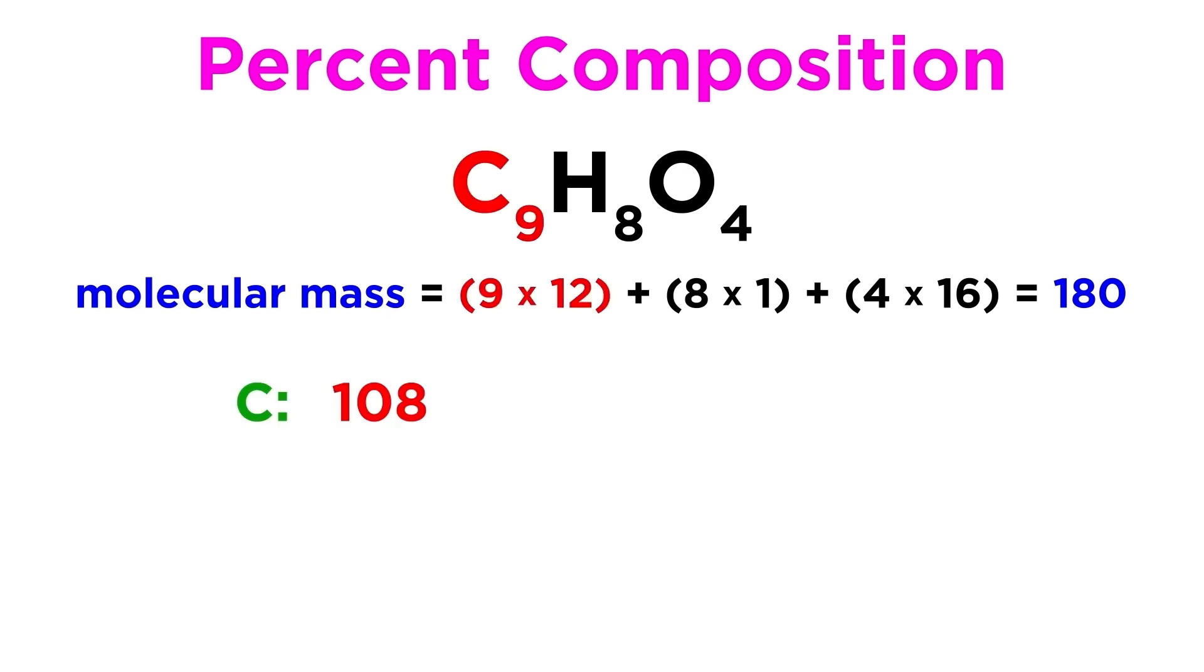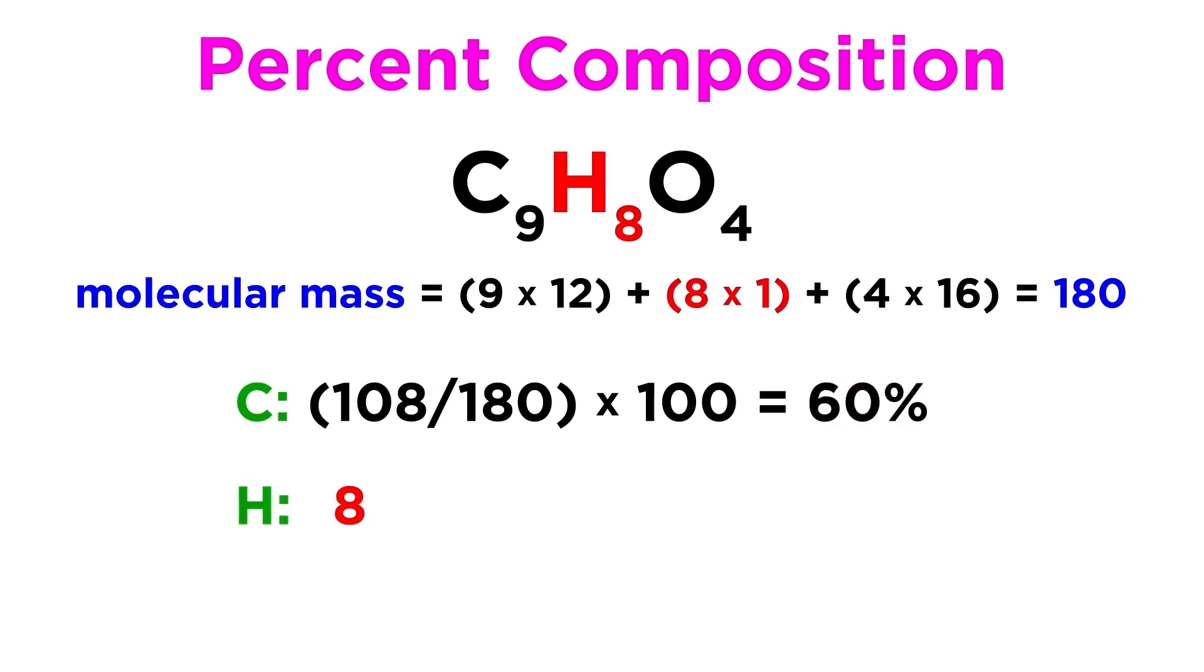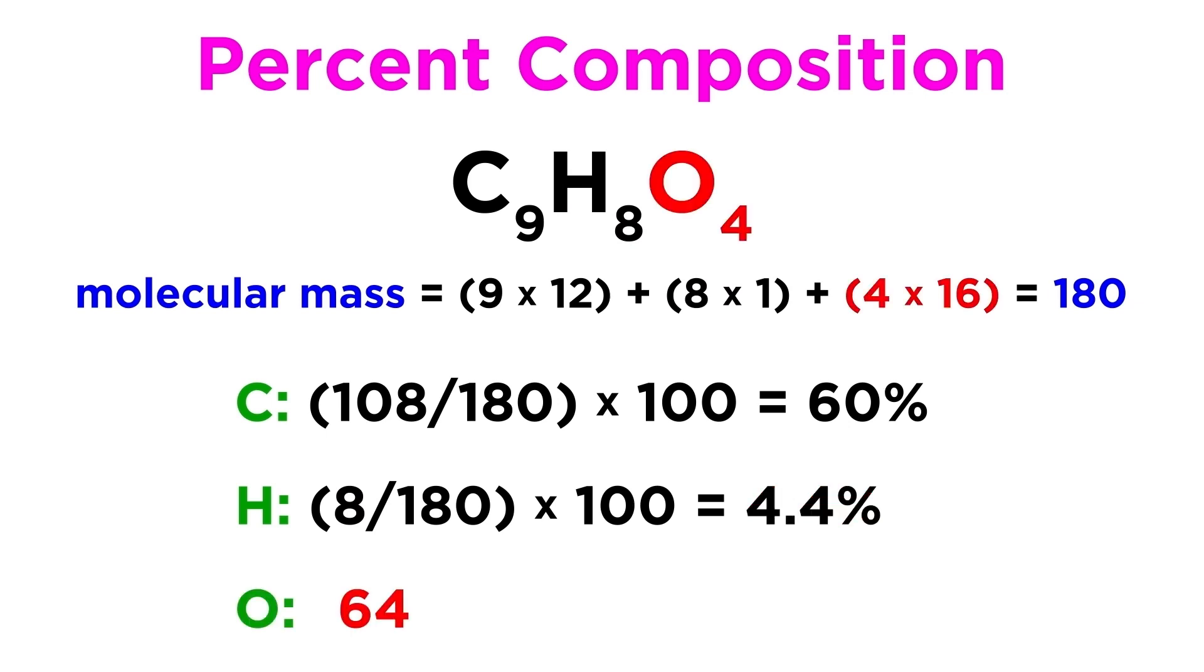9 carbon atoms times 12 atomic mass units per carbon gives us 108. 108 over 180 times 100 gives 60% for carbon. 8 hydrogen atoms times 1 atomic mass unit per hydrogen gives us 8. 8 over 180 times 100 gives us 4.4% for hydrogen. And 4 oxygens times 16 atomic mass units per oxygen gives us 64.